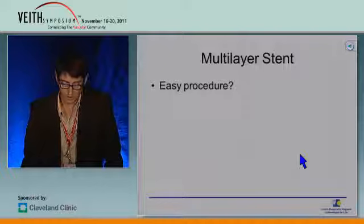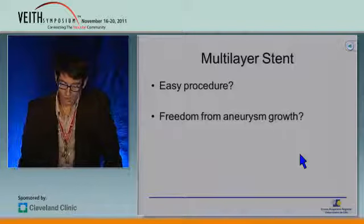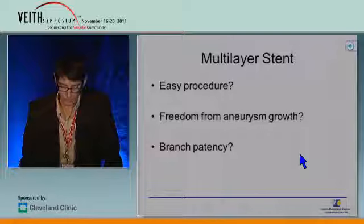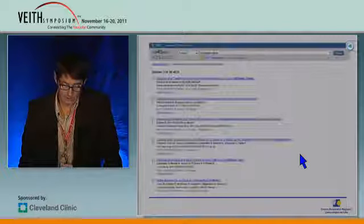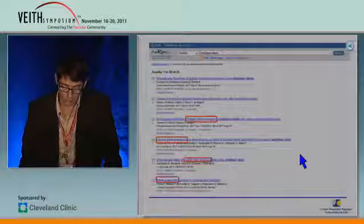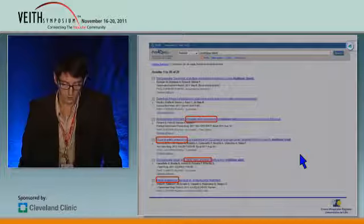So with a multilayer stent: is it an easy procedure? Probably yes, a very easy procedure. Do we change the natural history of the aneurysm? I'm not really sure, and we have really no data to support this. Branch patency — well, most of the time the branches will remain patent, but not always. And what data do we have to support the multilayer stent? I did a PubMed search and really only found papers on visceral aneurysms — a lot of papers with good results on visceral aneurysms, and only one case report on thoracoabdominal aneurysms.